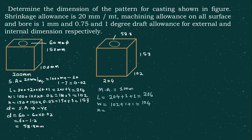As far as height is concerned, it is 153 plus 1 plus 1, coming out to 155. For the internal dimension, the machining allowance is again treated as negative. The bore dimension is already 58.8; we reduce it by twice the machining allowance of 1 mm, giving 56.8 mm. These are the dimensions after considering shrinkage and machining allowance.